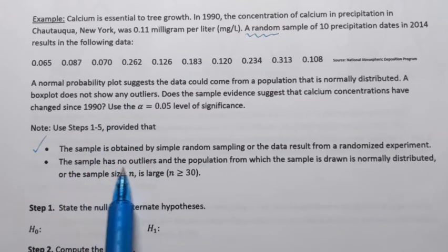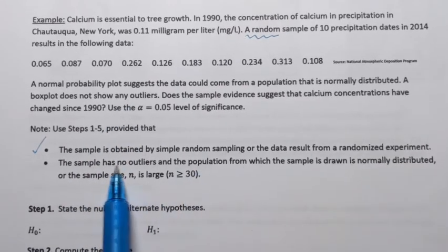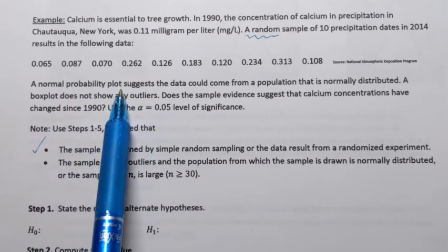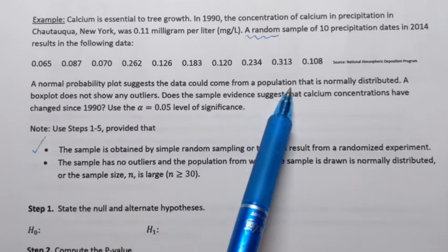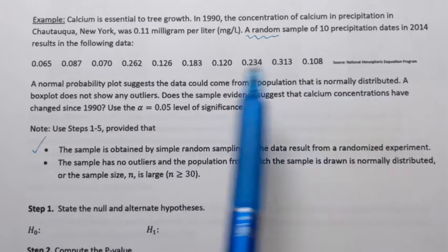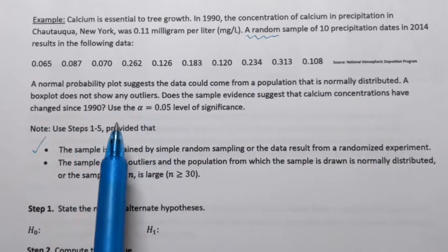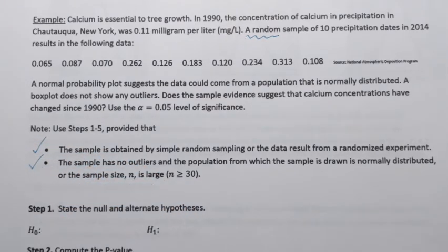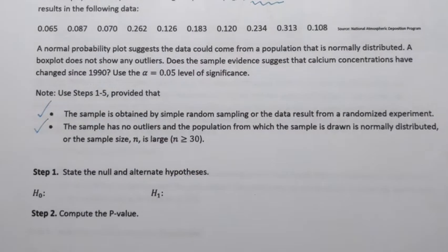But from the description of the problem we can see that this condition is actually satisfied. Those two conditions are satisfied. It says that normal probability plot suggests the data could come from a population that is normally distributed and the box plot does not show any outliers. So we can move on.